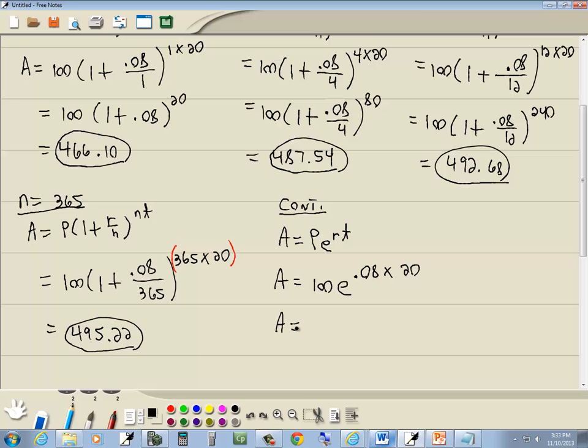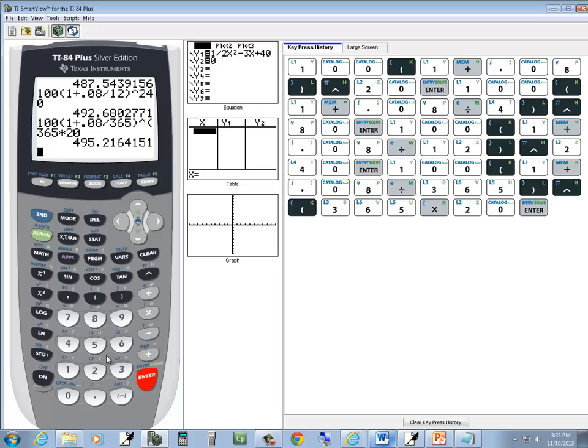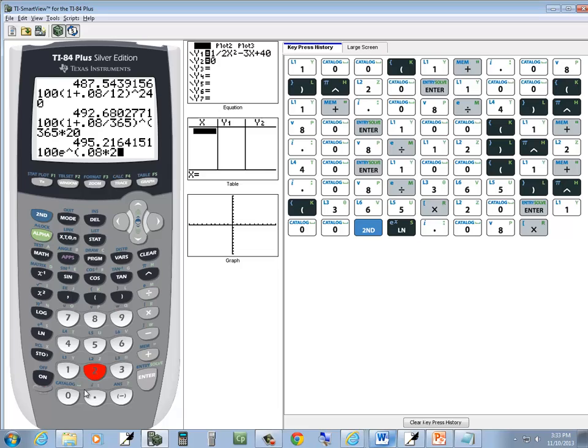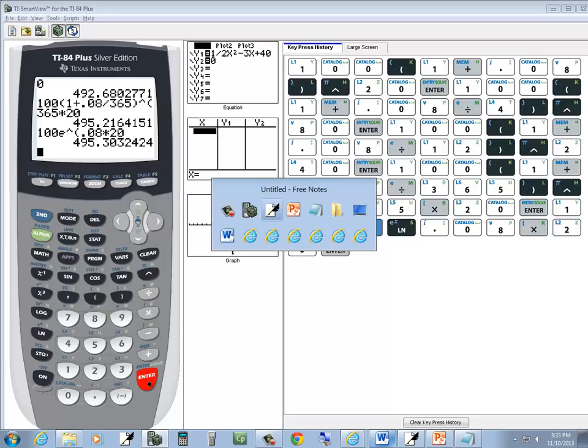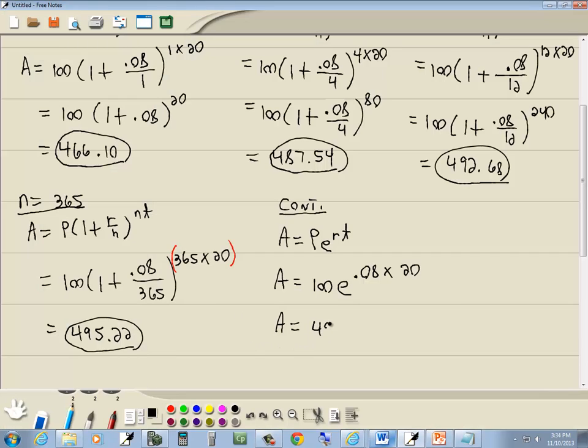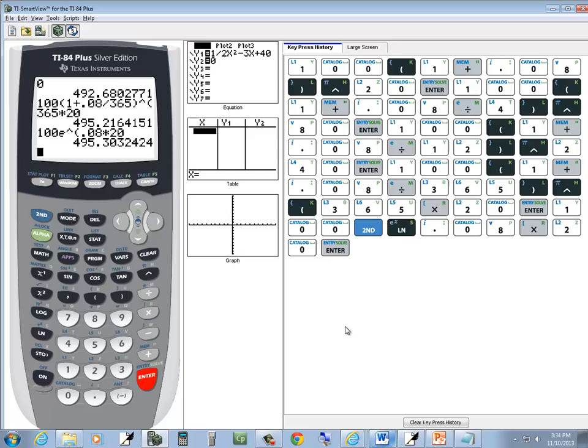Now, you have to be careful when you plug this one in. You don't want to put any extra parentheses in at all. So, we're gonna do 100, second L in to get to E, and notice it puts E, puts a carat, puts a beginning parentheses. And then I got 0.08 times 20. Now, notice when I put in 0.08 times 20, I'm not putting any extra parentheses in at all. I didn't actually do any parentheses. And then press enter. And that's gonna give us 495.30.